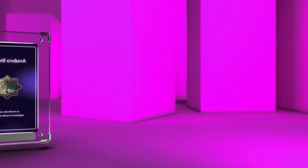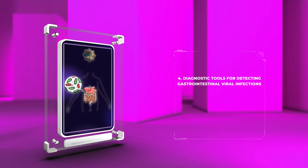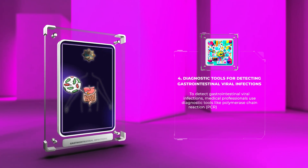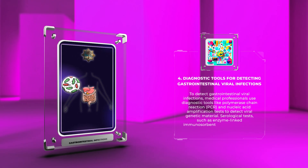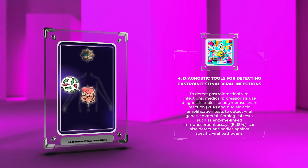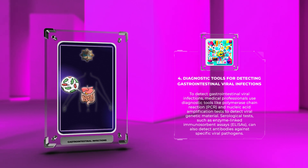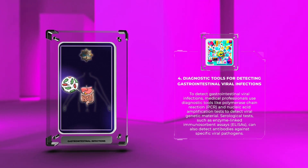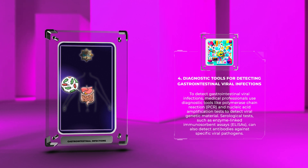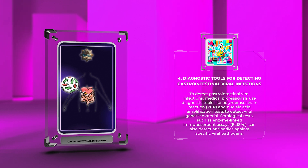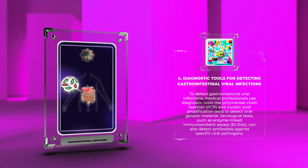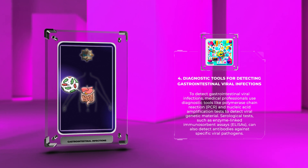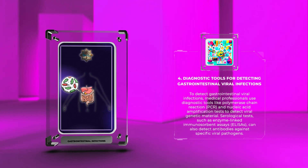To detect gastrointestinal viral infections, medical professionals use diagnostic tools like polymerase chain reaction (PCR) and nucleic acid amplification tests to detect viral genetic material. Serological tests, such as enzyme-linked immunosorbent assays (ELISA), can also detect antibodies against specific viral pathogens.